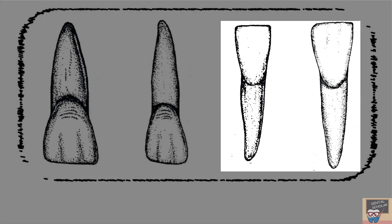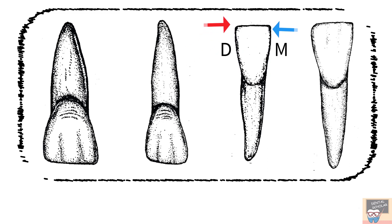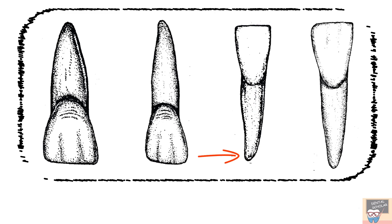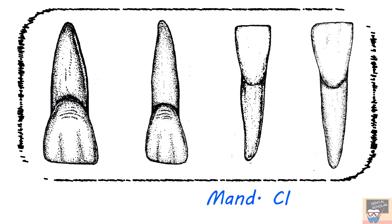Now let's identify the mandibular incisors. In the third tooth, the mesial and distal outlines are straight cervico-incisally and the mesio-incisal and disto-incisal angles are both sharp and similar. The incisal outline is straight and at 90 degrees to the long axis. The root is generally straight with slight or no distal bend. The tooth overall looks very symmetrical. So these features indicate that the tooth is a mandibular central incisor. The mandibular central incisor is the most symmetrical tooth.